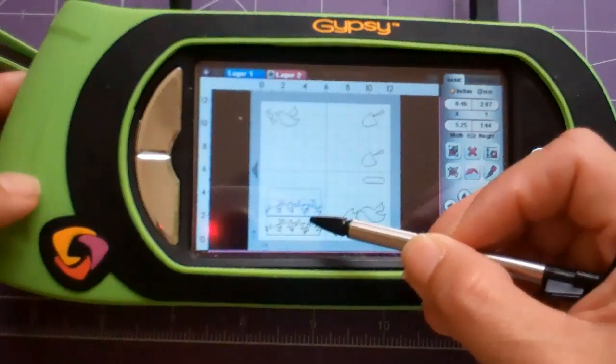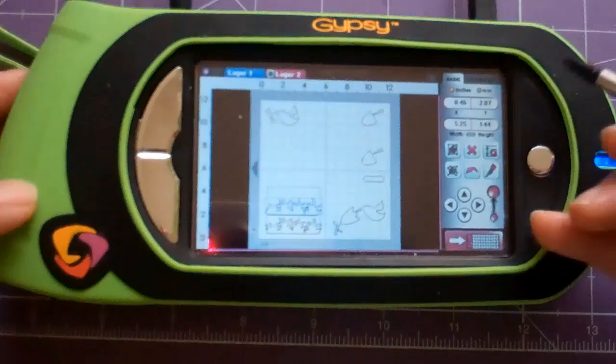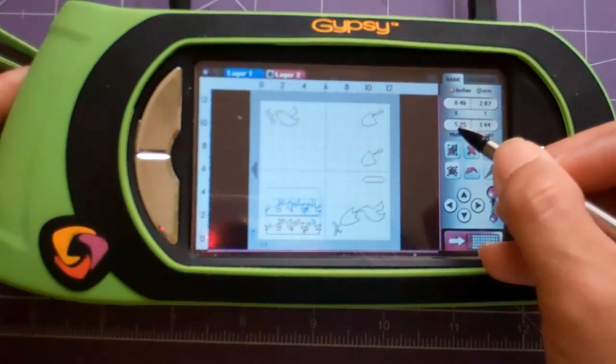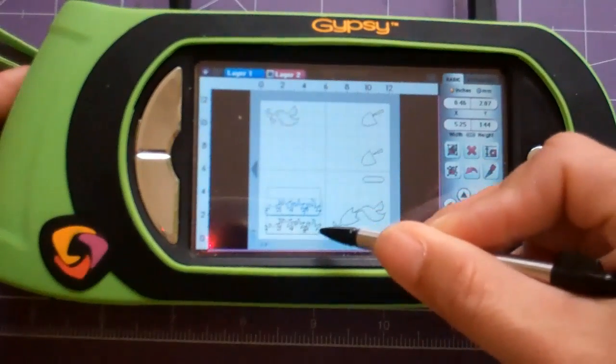on my Gypsy, what I did with the grass was I unlinked it. Right here there's a little link - I unlinked it and I sized the width at 5.25 because that's how wide my mat is going to be.